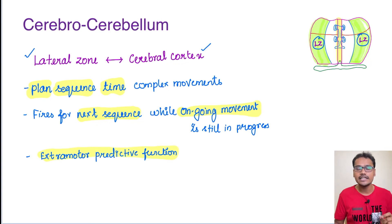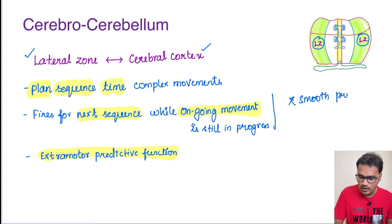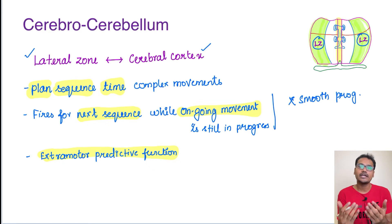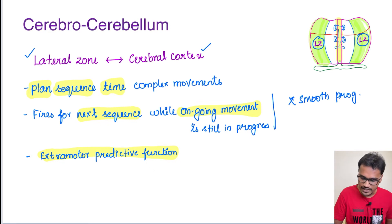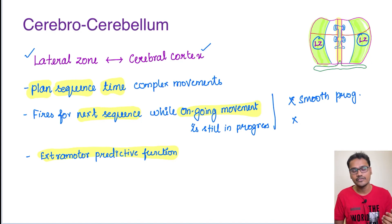If this part becomes defective, there will be obstruction in the smooth progression because it is predicting the next movement. The smooth progression from one movement to the next will not happen. For example, if a person is running and has to stop before a wall, he cannot predict it and might hit the wall because his cerebellum is not functional. These are the issues whenever the cerebrocerebellum is defective.